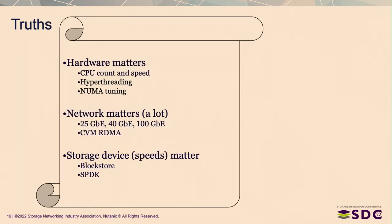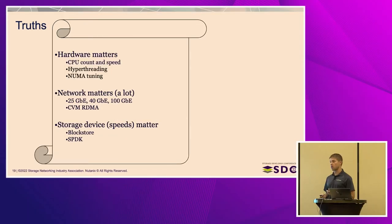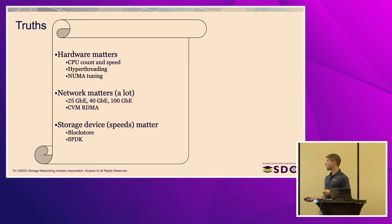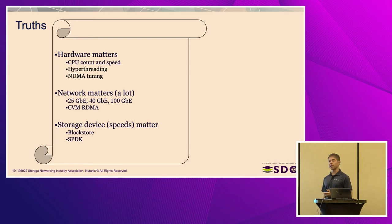A few things we found to be true: hardware still matters, even for software-defined. Scaling up FSVMs with more CPU and memory — same with CVMs — they take advantage of it. CPU count and speed still matter. Some platforms only have 8 CPU available, but scaling to a 12-CPU platform let us double our sequential write performance. If you're locked into an 8-CPU socket, we found that over-provisioning with hyper-threading — moving from 8 vCPU to 12 running on top of 8 physical CPUs — can improve performance by 37% for some workloads.